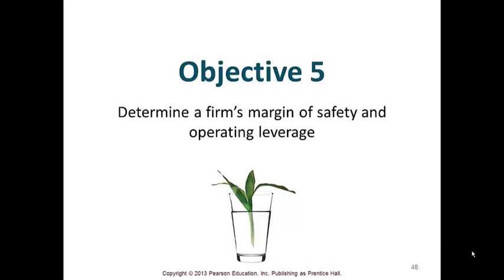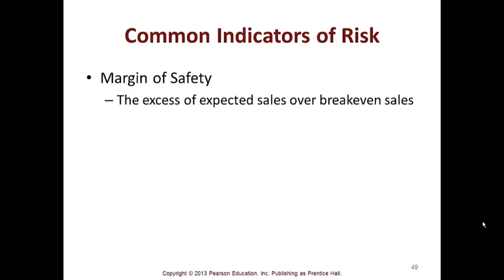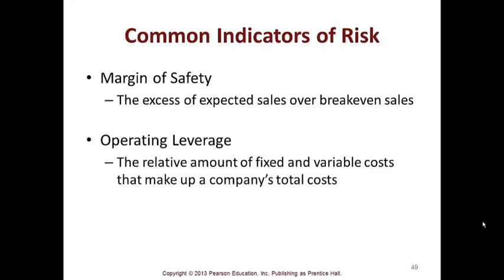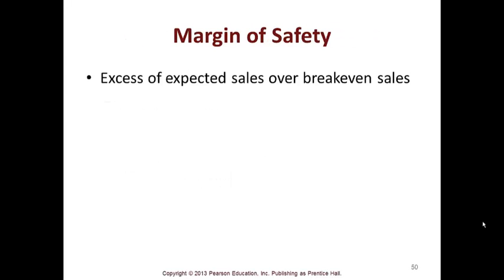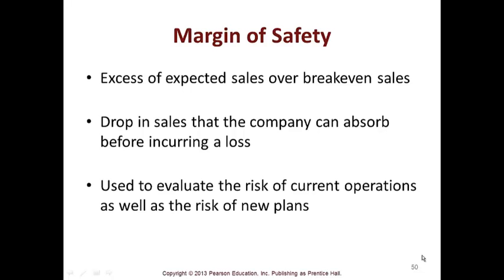Moving on to objective five: determine a firm's margin of safety and operating leverage. Margin of safety and operating leverage are indicators of risk. Margin of safety is the excess of expected sales over break-even sales — I like to call it the cushion. It measures the drop in sales a company can absorb before incurring a loss, and is used to evaluate the risk of current operations as well as the risk of new plans.